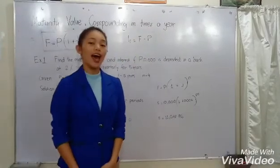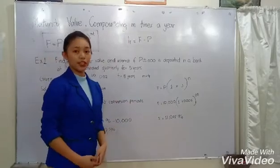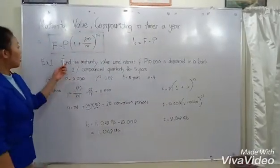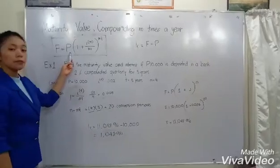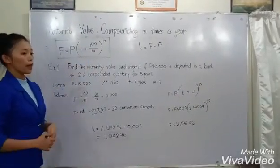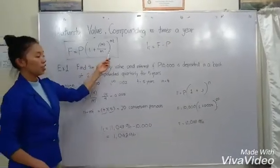Today, I'm going to teach you how to get the maturity value compounding n times a year. Using this formula, where F is the maturity value, P as the principal, i to the power of m as the nominal rate of interest, and m as the frequency of conversion.